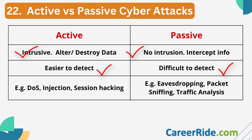Examples of active cyber attacks include DOS attacks, injection attacks, and session hijacking. Examples of passive attacks include eavesdropping, traffic analysis, and packet sniffing. Preventing active cyber attacks requires measures like firewalls, intrusion detection systems, and encryption. To prevent passive cyber attacks, you emphasize encryption, secure communication protocols, and traffic monitoring. The approach of handling is also different since their modus operandi is different.